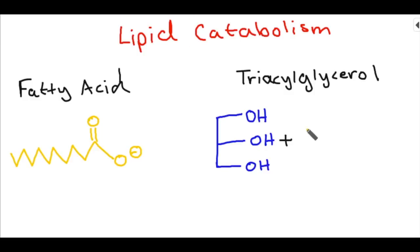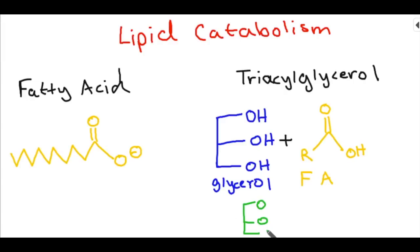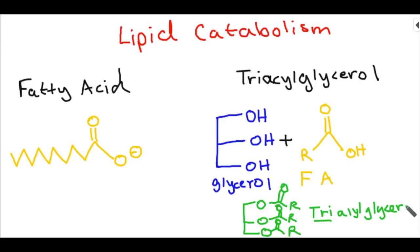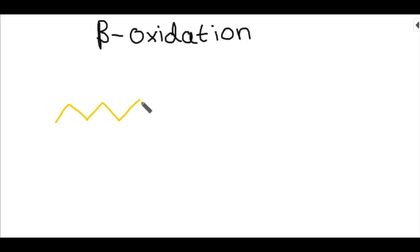Triacylglycerol is going to have a backbone of three carbons with three hydroxyl groups. When you have a glycerol and a fatty acid coming together — remember that the R just stands for any amount of carbon chains — you get your triacylglycerol. Tri means 3, acyl refers to the fatty acid groups, and glycerol is the backbone.